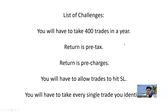400 trades in a year is roughly 33 to 35 trades in a month, which means you will have to take more than one trade every single day. There are 20 to 22 trading days in a month, factoring in holidays. So your system has to be designed to give you more than one trade per day on average. That's a challenge, because the more trades you take, the more you expose yourself to the market, and the more risk you are taking.